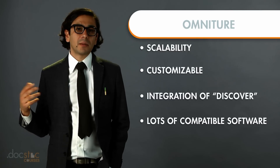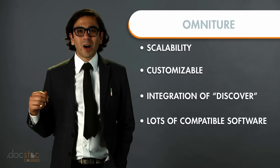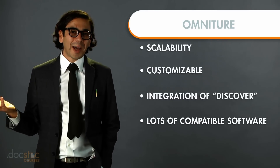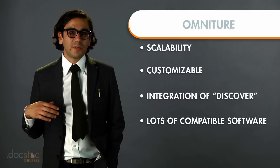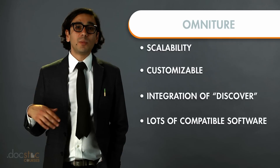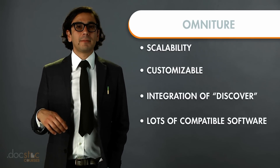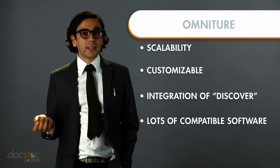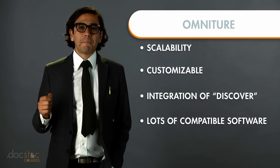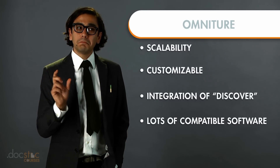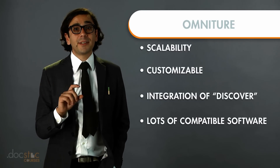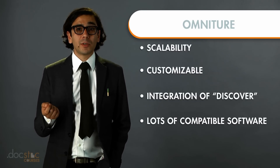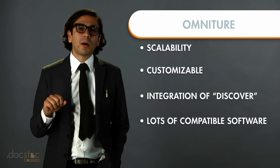Another advantage of Omniture is that it has a host of sister software that it's compatible with. Oftentimes those software companies get bought out by Omniture, so they become part of the Adobe suite, such as Test and Target. Test and Target is an A/B testing software that allows you to serve up two different pieces of content to virtually the same user, and that's all integrated into Omniture.